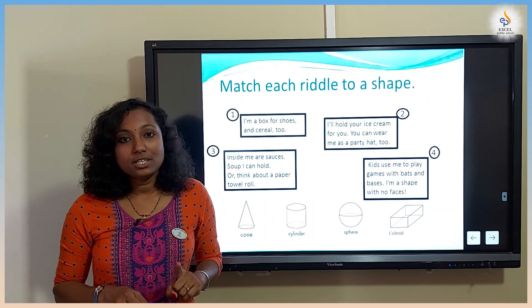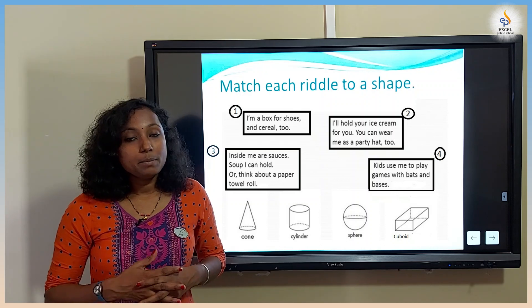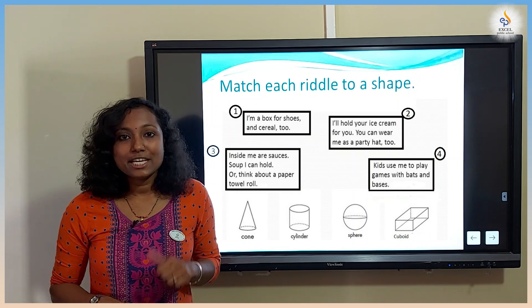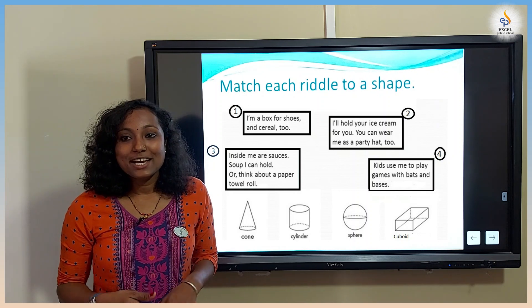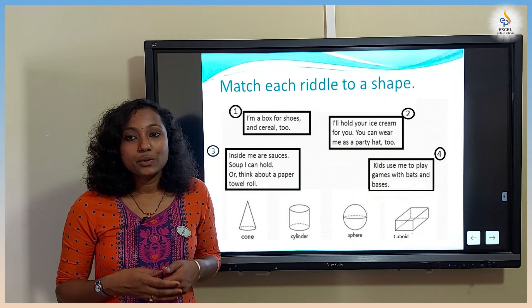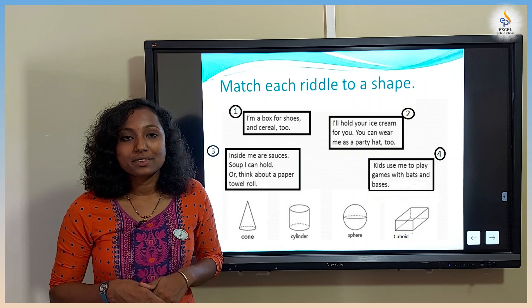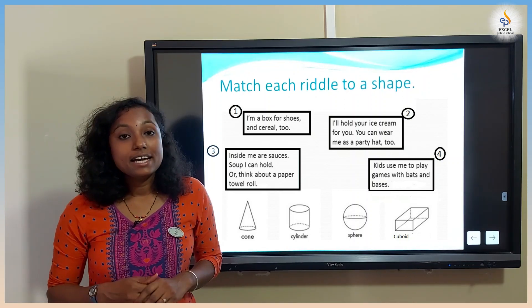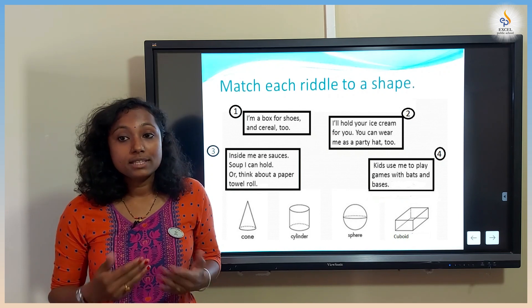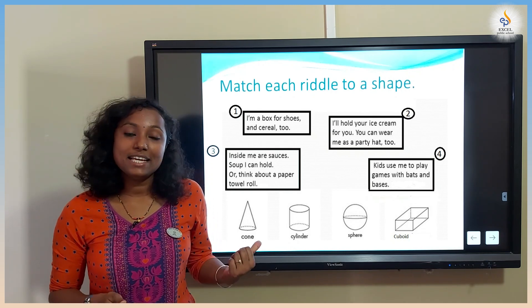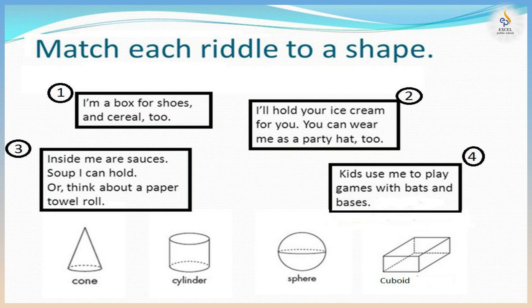Let's solve some riddles — match each riddle to a shape. The first one: I'm a box for shoes and cereal too — guess who am I? Yes, it's a cuboid. The second one: I will hold your ice cream for you, you can wear me as a party hat too — guess who am I? Yes, it is a cone. The third riddle: inside me a sauce or soup I can hold, or think about a paper towel roll — guess who am I? Yes, it's a cylinder. The last riddle: kids use me to play games with bats and bases — guess who am I? Yes, it's a sphere.